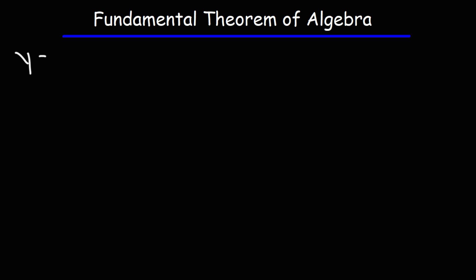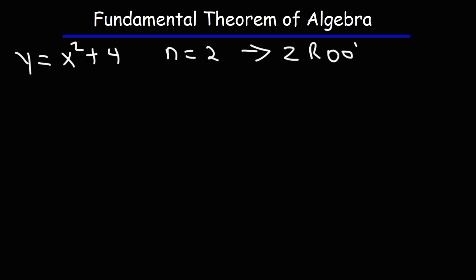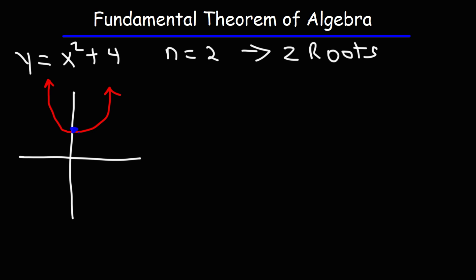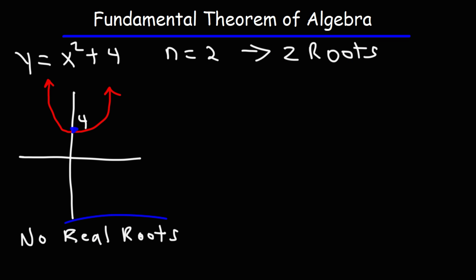Now consider y equals x squared plus 4. We still have a degree 2 polynomial, so we must have exactly two roots. This parabola has been shifted vertically up 4 units, with y-intercept at (0, 4). Notice that this graph does not touch the x-axis, so there are no real roots. But according to the fundamental theorem of algebra we still have exactly two roots — they're just not real. We have two imaginary solutions.